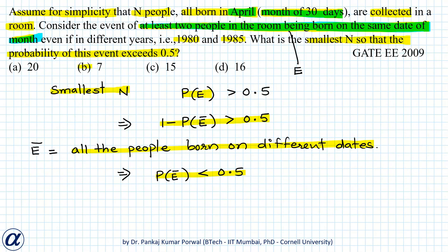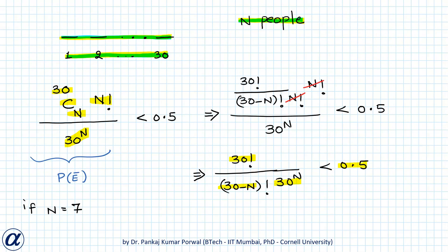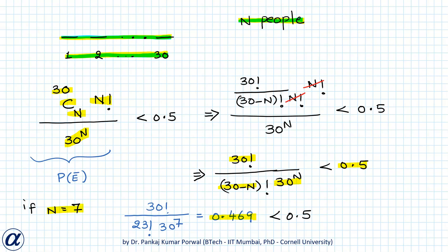We want to find the smallest n such that 30 factorial divided by (30 minus n) factorial times 30 to the power n is less than 0.5. Looking at our options, the smallest n is 7. Let's try n equals 7 — this expression gives a value of 0.469, which is less than 0.5. So n equals 7 is the smallest value among the given options for which P(E-bar) is less than 0.5. However, we are not sure if it is the smallest possible n out of all natural numbers.